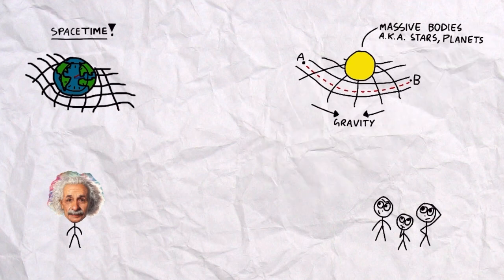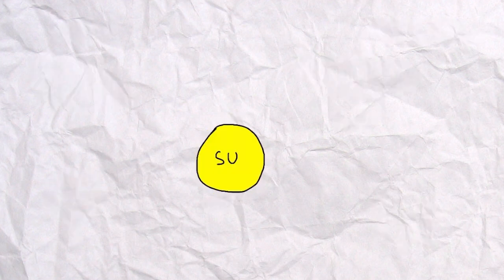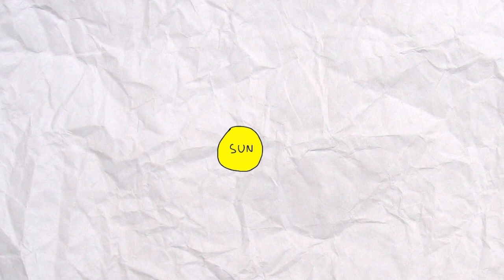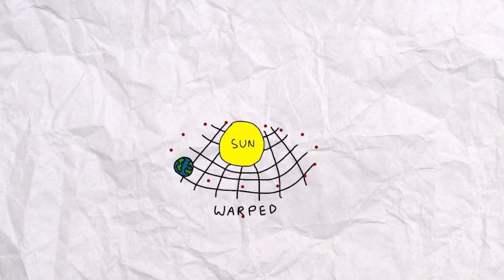But luckily for him, a solar eclipse emerging only a couple of months after his publication would bring him much ease. The Sun is the largest object in our solar system, so according to Einstein's General Theory of Relativity, the Sun will warp spacetime in the solar system by the largest amount. The planets simply follow the shortest path through spacetime around the Sun, thus explaining their orbits.